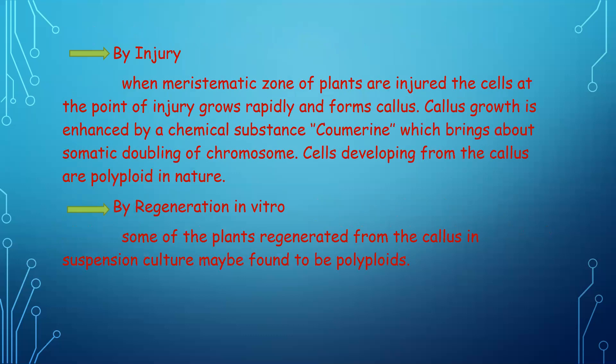Another technique is by injury. When the meristematic zones of plants are injured, the cells at the point of injury grow rapidly and form a structure called callus. Callus is full of meristematic cells. The callus growth is enhanced by a chemical substance that brings about somatic doubling of chromosomes, and the cells developing from the callus are polyploid in nature.